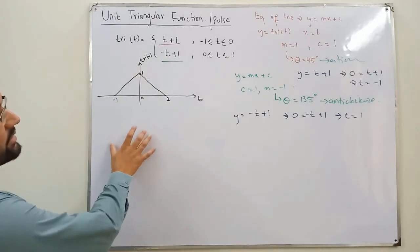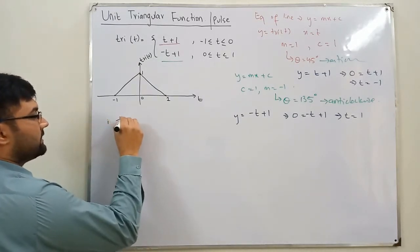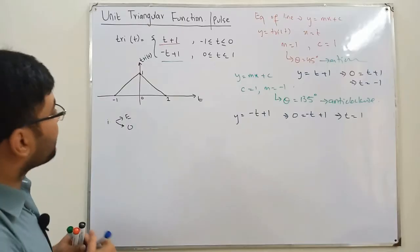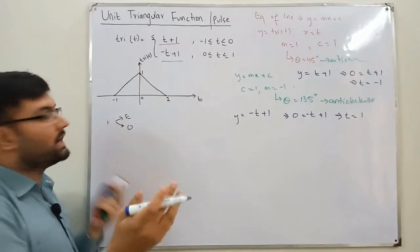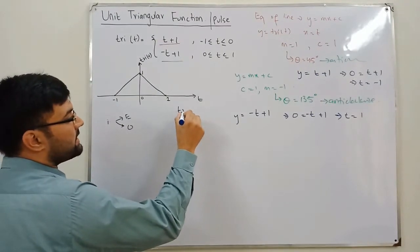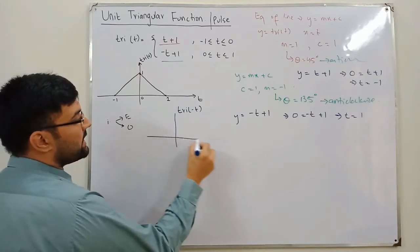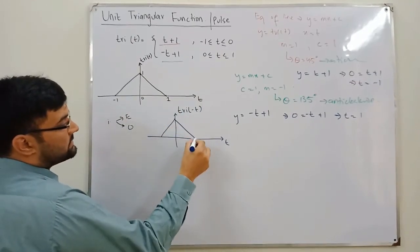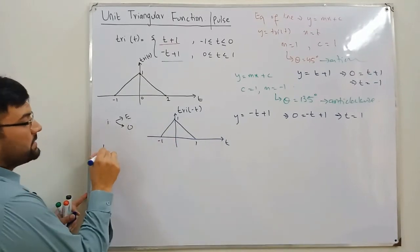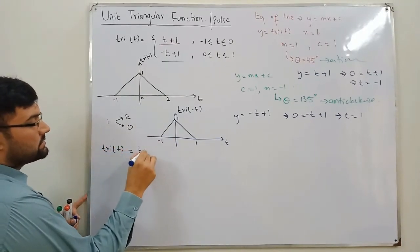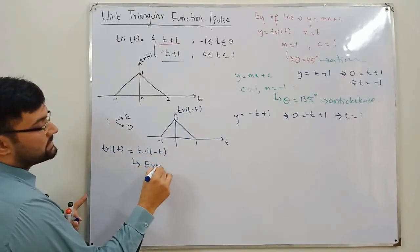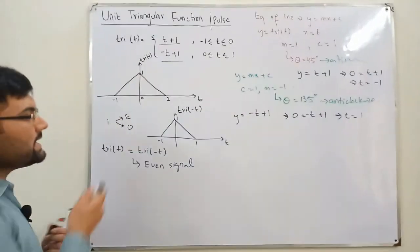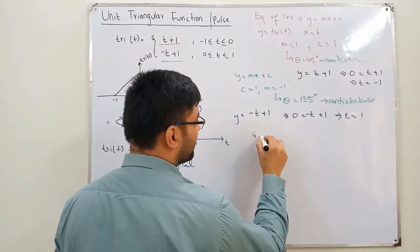Now let's check if this is an even or odd signal. To check, we look at tri(-t): we flip the signal around the y-axis. The triangular signal is symmetrical about the y-axis, so it looks the same. This means tri(t) = tri(-t), which implies that the triangular signal is an even signal.